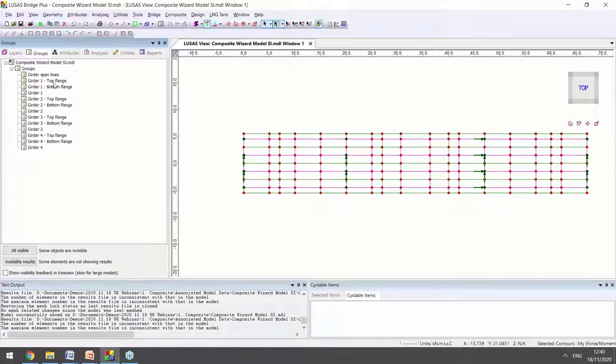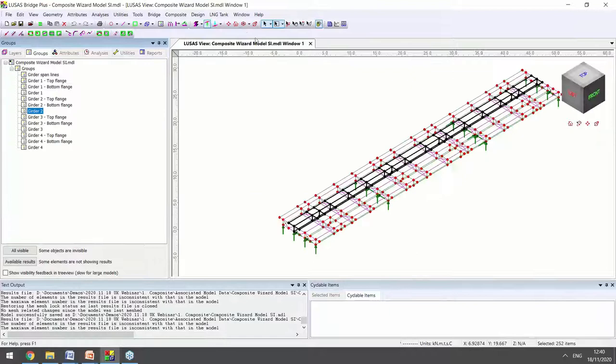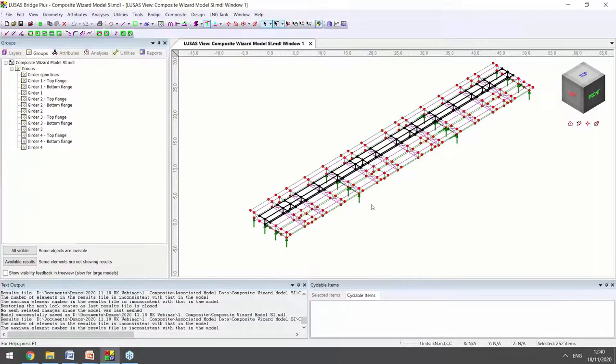If we look at the groups tab, we've got some automatically generated groups here. And if we select the members of girder 2, for longitudinal design, we want to consider all of these elements acting together compositely. So we want to get the stresses from the deck slab added to the stresses from the beam in order to get the total bending moment on the composite section.